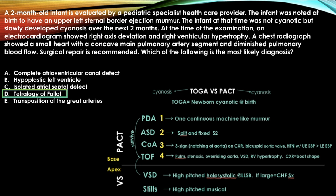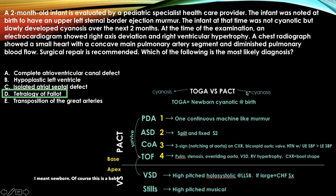The answer is tetralogy of Fallot. A two-month-old presenting with cyanosis — not a newborn cyanotic at birth — so rule out TOGA and go straight to TOF. There are other giveaways in the question that aren't on the chart, but from studying these cases you recognize that TOF and TOGA are the two most common presentations with cyanosis.